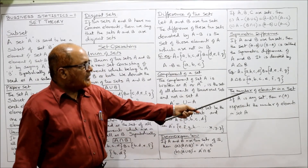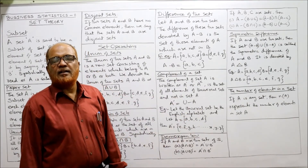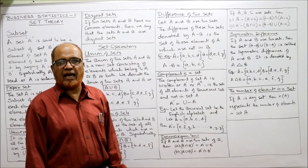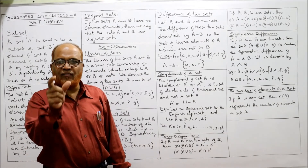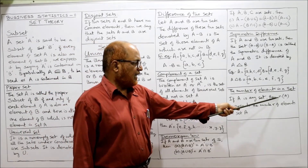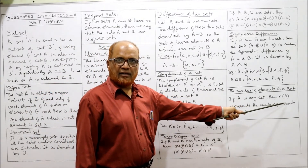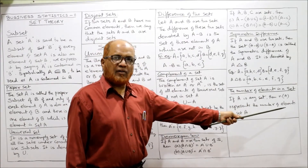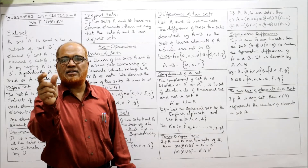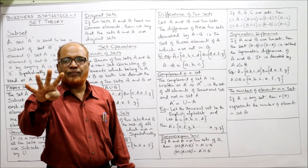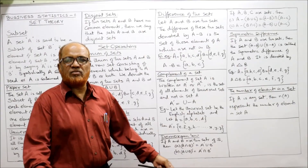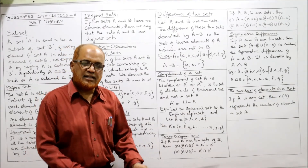The number of elements in a set is denoted by small n. If A is any set, then n(A) represents the number of elements in set A. For example, if A is a set having four elements, then n(A) = 4. This is how we represent the number of elements in a set.